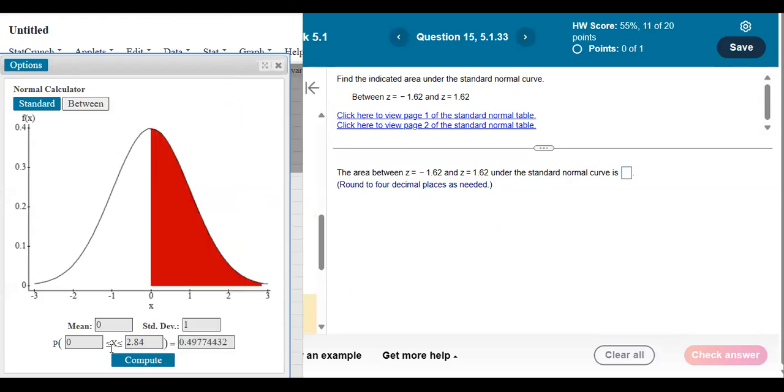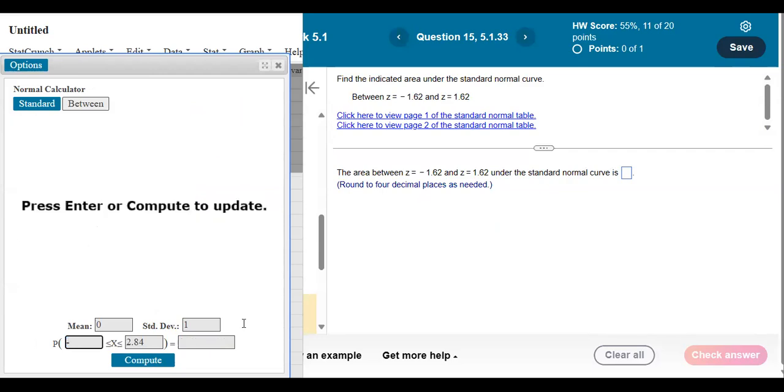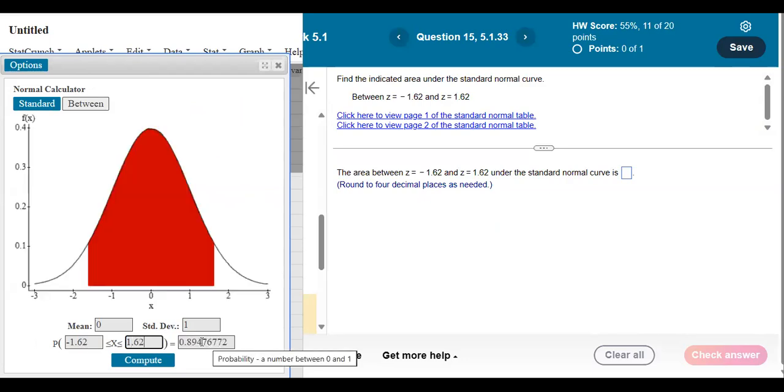Yeah. What the heck. I said one more, but I lied. Let's do this one too. This is another between. We have two z-scores. Negative 1.62 and positive 1.62. Enter. And what do we get? I'm gonna have to round this one. 0.8948.